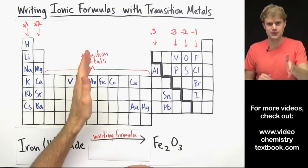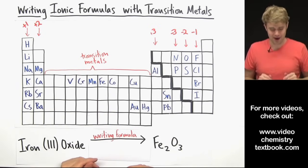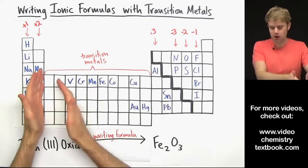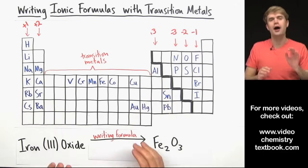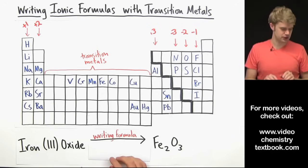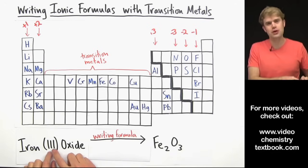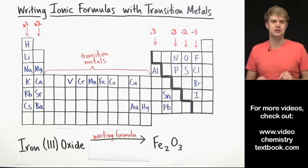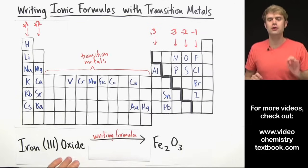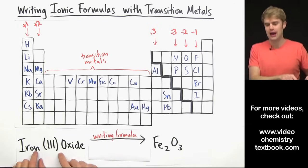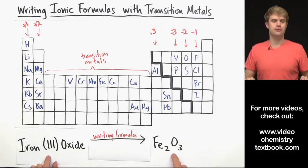This video is writing ionic formulas with transition metals. The transition metals are the elements in this part of the periodic table here, and ionic compounds that have transition metals in them usually have Roman numerals in the name like this here. So in this video we'll learn how to take a compound that has a transition metal in it and how to write a chemical formula for that.